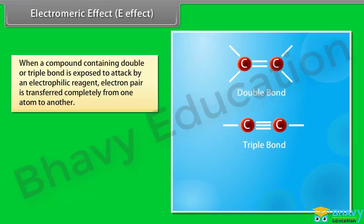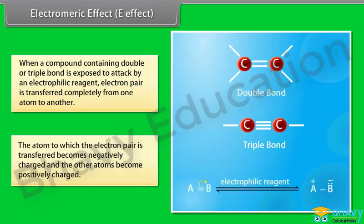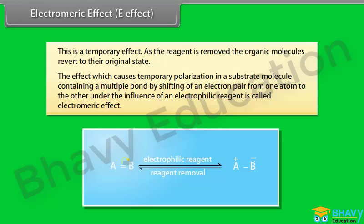The electromeric effect: when a compound containing a double or triple bond is exposed to attack by an electrophilic reagent, the electron pair is transferred completely from one atom to another. The atom receiving the electron pair becomes negatively charged and the other becomes positively charged. This is a temporary effect — as the reagent is removed, the organic molecule reverts to its original state. This temporary polarization under the influence of an electrophilic reagent is called the electromeric effect.